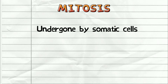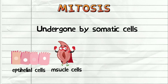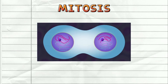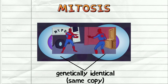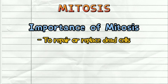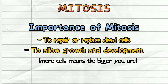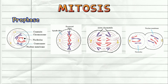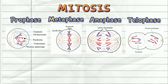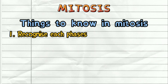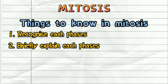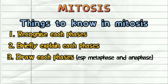Mitosis is undergone by all somatic cells in your body. Somatic cells are basically all your body cells, excluding gametes, which are the sperm and ovum. When mitosis occurs, it produces two genetically identical daughter cells. The importance of mitosis is to produce more cells in your body, to repair or replace dead cells, and also to allow growth and development. The whole mitosis process is divided into four phases: prophase, metaphase, anaphase, and telophase — or we usually just call them PMAT. There'll be three things we need to know: how to recognize each phase, how to briefly explain each phase, and how to draw each phase, especially metaphase and anaphase.